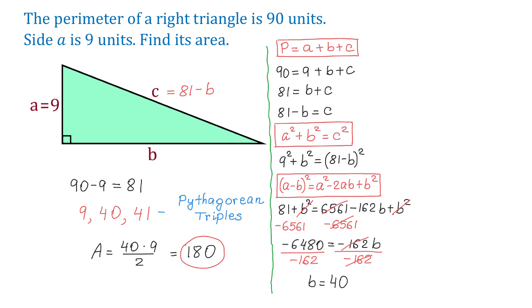And now once we know B, we can find the area. The formula is A equals 1 half times base times height. In this triangle, the base is 40 and the height is 9. Then area equals 1 half times 40 times 9. Then the area is 180 square units. I hope you enjoyed this problem and thank you for watching.